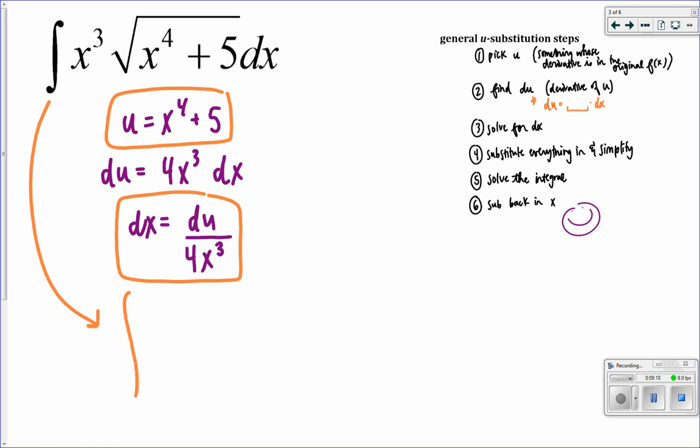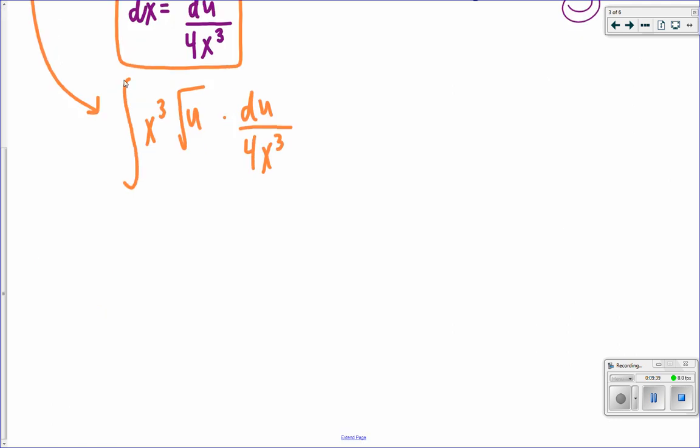So, I really have the integral of x cubed times the square root. I don't have to make it that big, because it's really just the square root of u. But instead of dx, I'm going to say du over 4x cubed. This is great. My x's are going to cancel. So, I have x cubed, x cubed. I really have the integral, I'm going to make this 1 fourth a coefficient, 1 fourth times the square root of u du. And this is not a bad integral.